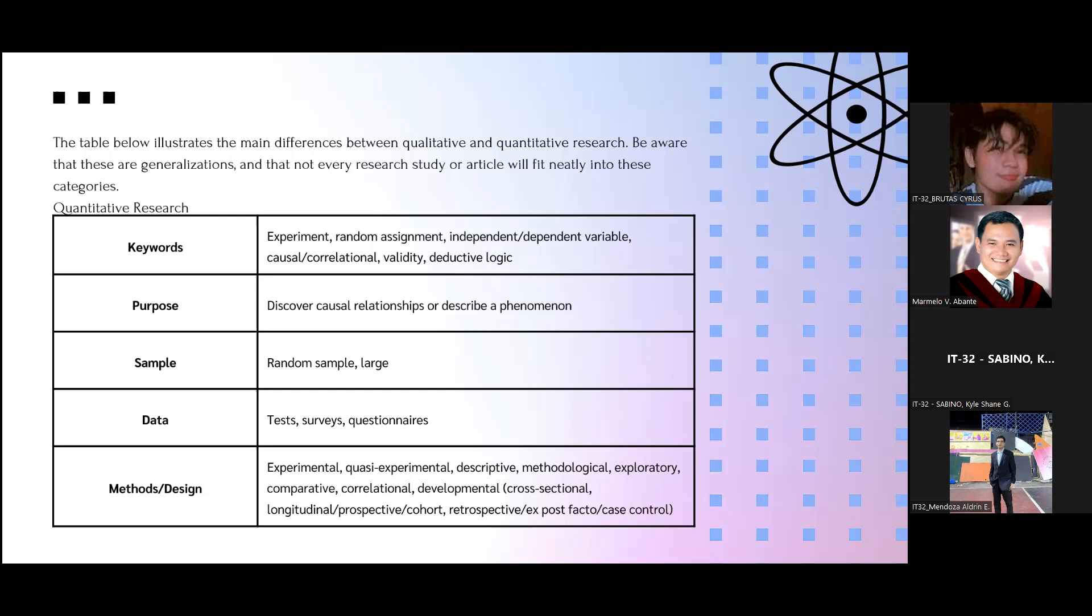In quantitative research, the keywords are experiment, random assignment, independent variable, causal, correlational, validity, and deductive logic. Its purpose is to discover causal relationships or describe a phenomenon. Sample is random sample and large. Data is tests, surveys, and questionnaires. In methods and design you can use experimental, quasi-experimental, descriptive, methodological, exploratory, comparative, correlational, developmental or cross-sectional, longitudinal and prospective or cohort, retrospective, ex post facto, and case control.